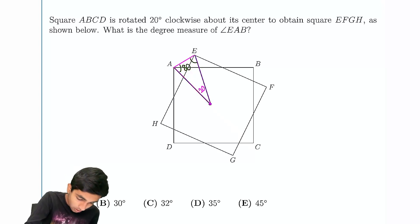And therefore, if this pink angle is 45, and the entire thing is 80, EAB is just 80 minus 45, which is 35 degrees.